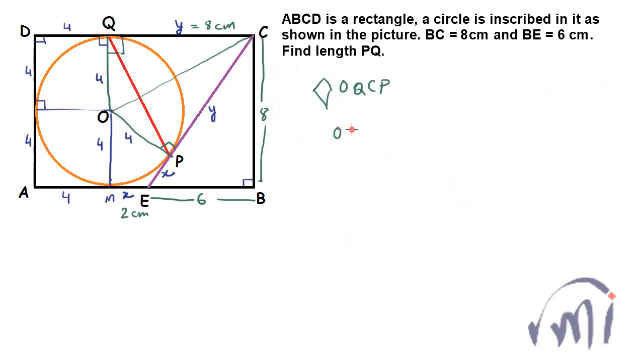So I can easily find the value of OC. OC square will actually be equal to 8 square plus 4 square, and this will be equal to 64 plus 16, that is 80. Or you can say OC is equal to 4 square root of 5.